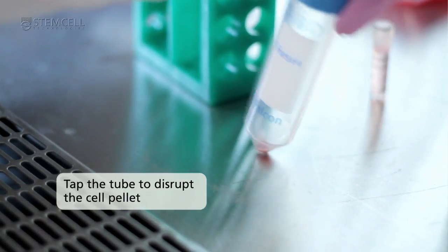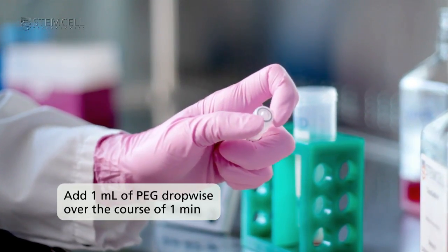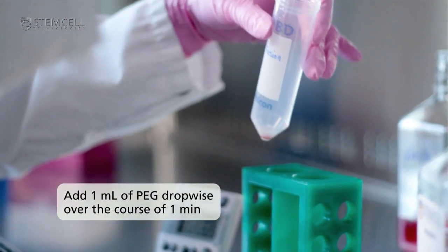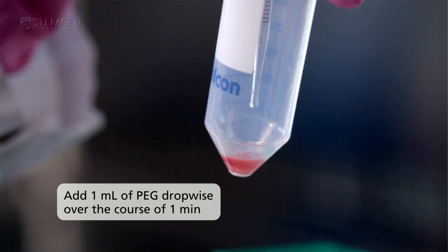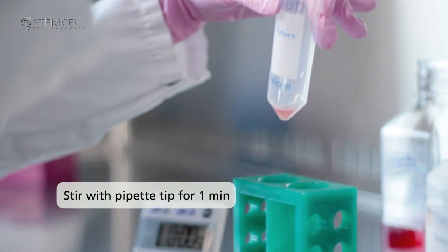Tap the bottom of the tube to disrupt the cell pellet. Add 1 mil of PEG drop-wise using a 1 mil serological pipette. The PEG should be added over the course of 1 minute with no stirring. After addition of PEG, stir with the pipette tip for 1 minute.